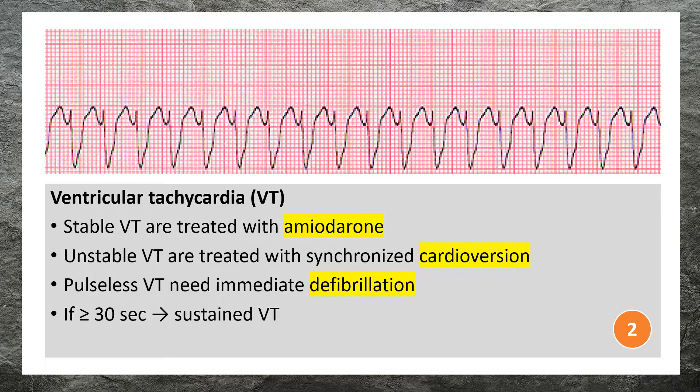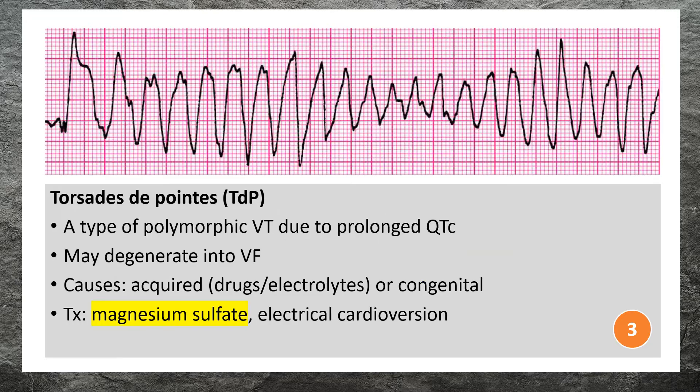Stable VT patients are treated with amiodarone. Patients with unstable VT are treated with synchronized cardioversion, and patients with pulseless VT need immediate defibrillation.